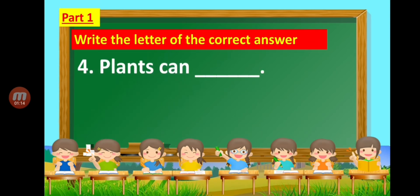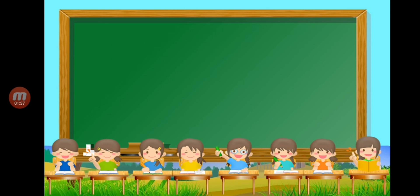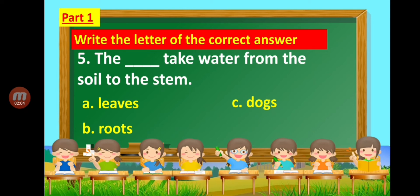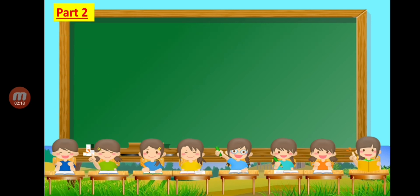Number 4: Plants can blank. A — run, B — grow, C — talk. Number 5: The blank takes water from the soil to the stem. A — leaves, B — roots, C — dogs.